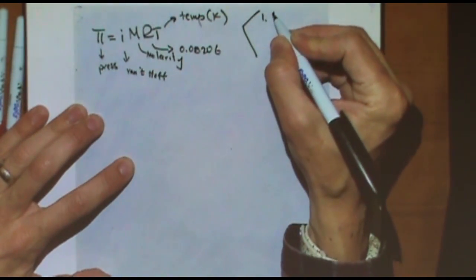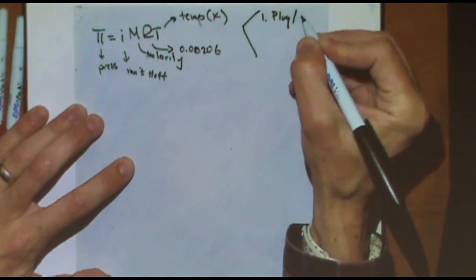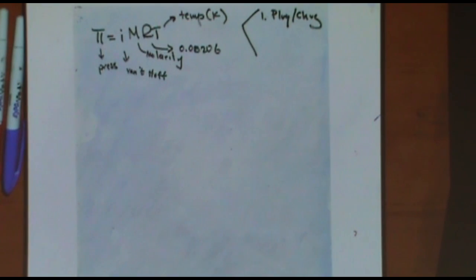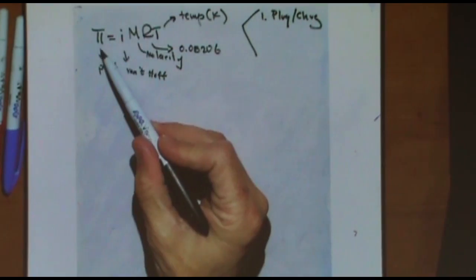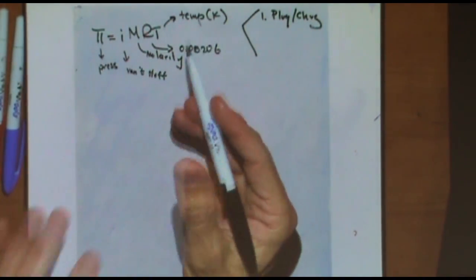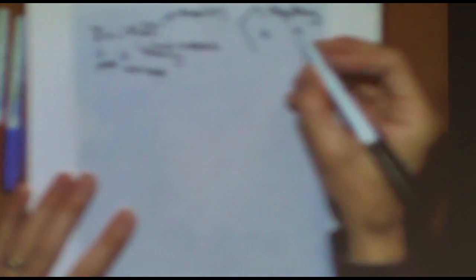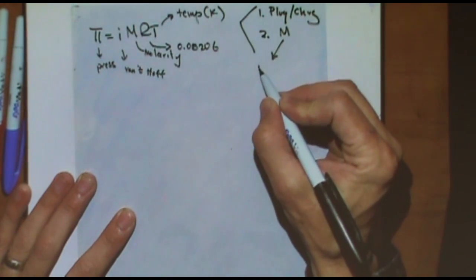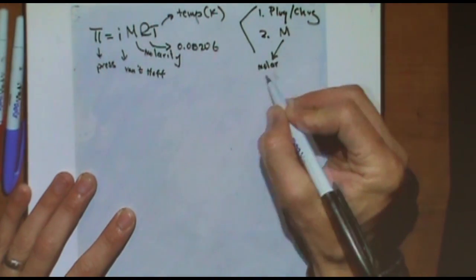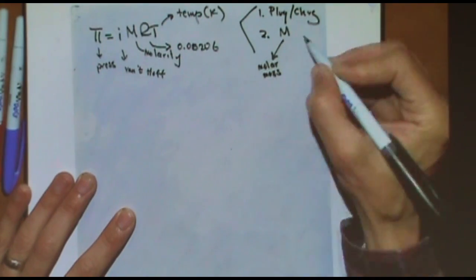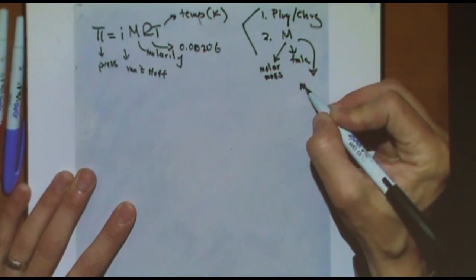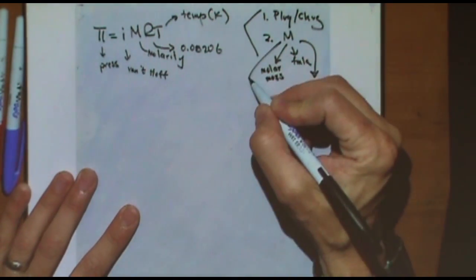So there's two kinds of problems. One is the plug and chug, which means you're given all the variables but one. Usually you'll be solving for either osmotic pressure or molarity. Two is a more complicated problem where the answer lies within molarity. But within molarity we could ask for molar mass, the molecular formula, mass, moles, things like that.